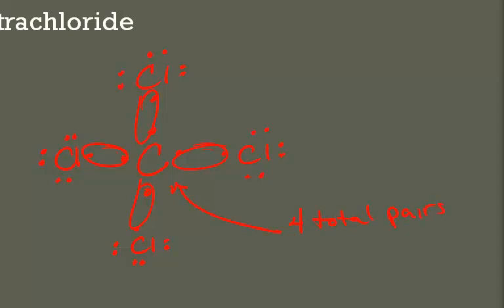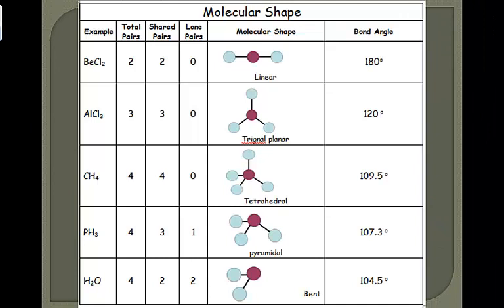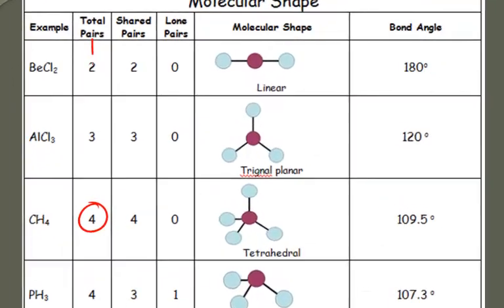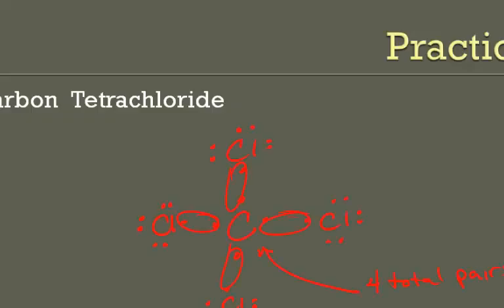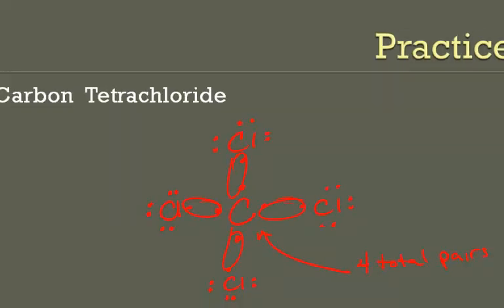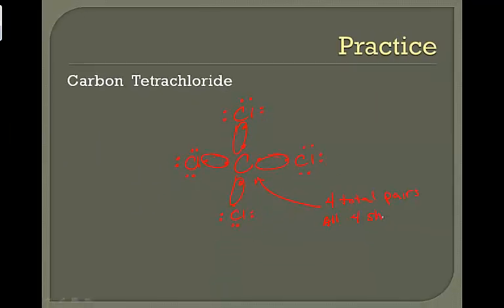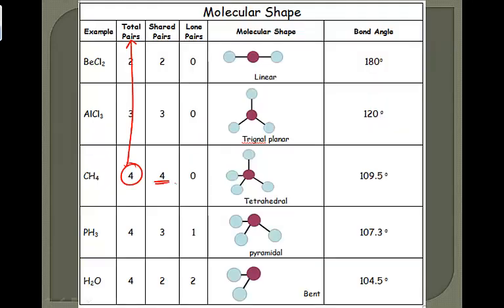When we look back at our molecular shape sheet, we see four total pairs of electrons. In carbon tetrachloride, all four are shared. So four total pairs with all four shared tells us that carbon tetrachloride is tetrahedral and has a bond angle of 109.5 degrees.